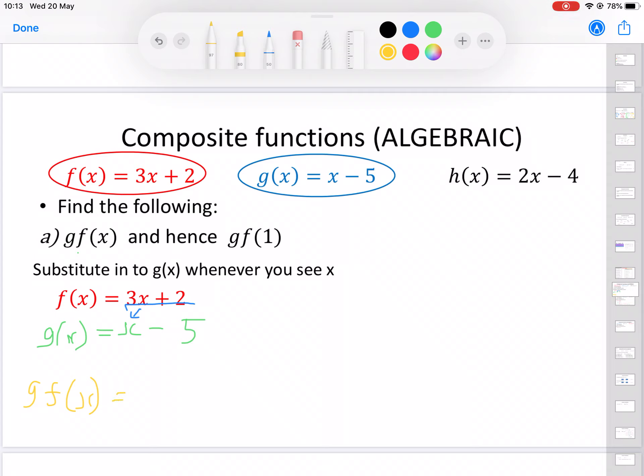Instead of here, we're going to have gf(x). That's now going to become, instead of the x, that's going to become 3x + 2, and then we're still going to minus the 5 on the end. So this bit I'm highlighting here is our f function, and we've just put it into our g function where the x used to be.